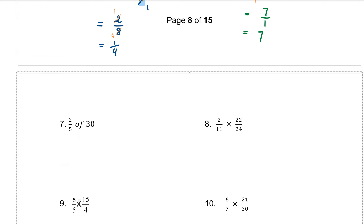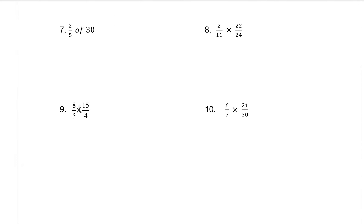By the way, marks are allocated to the cancelling part — I need to see that cancelling when you're doing these questions. Question 7: 2 over 5 of 30. So that means 2 over 5 times 30 over 1 — the whole number 30 gets put over 1. Then we cancel: the 5 and the 30 diagonally, I can divide by 5, which gives 1 and 6. That's the only cancelling possible. Times what's left: on the top, 2 times 6 is 12, and 1 times 1 on the bottom is 1. Answer is 12.